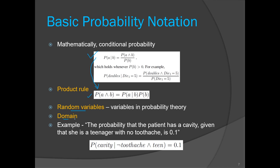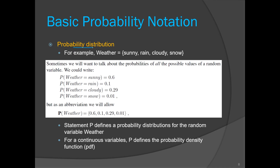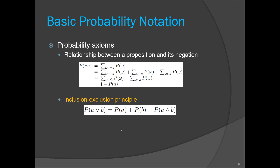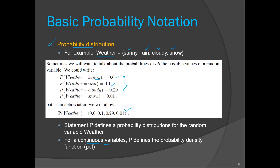Then we covered random variables and their domain — the set of all possible values. We discussed probability distribution for a single variable. For example, if our variable is weather with four values — sunny, rain, cloudy, and snow — each value occurs with some probability, such as sunny with 0.6 and rain with 0.1. The distribution of these probabilities is known as probability distribution. For a continuous variable, the distribution is governed by a probability density function (PDF).